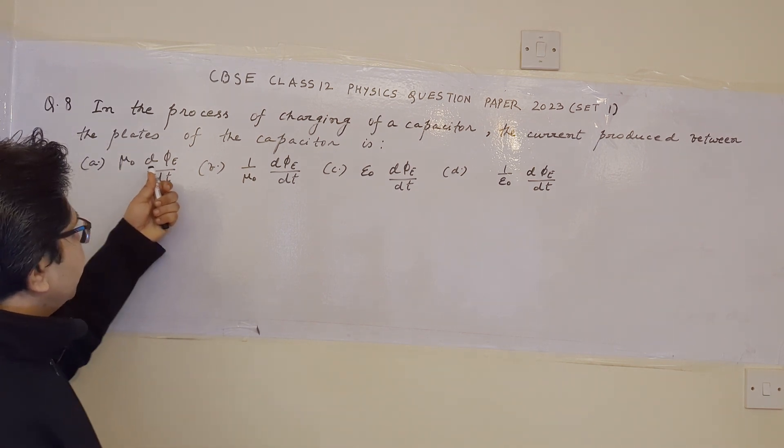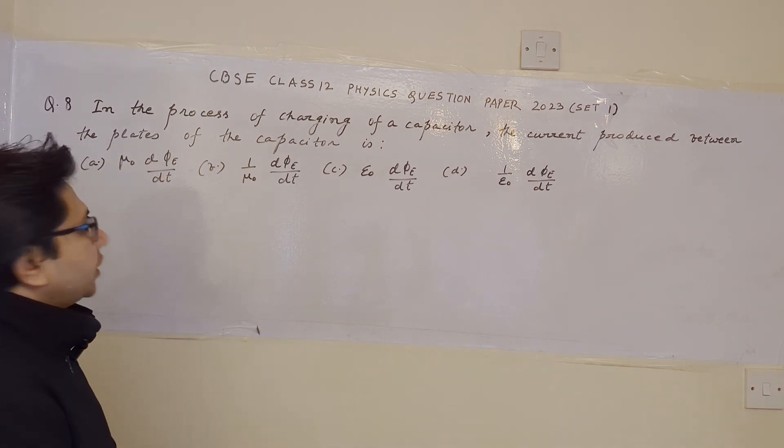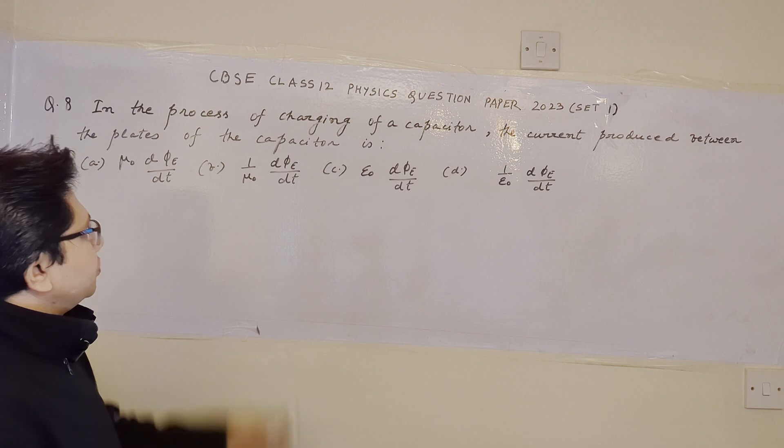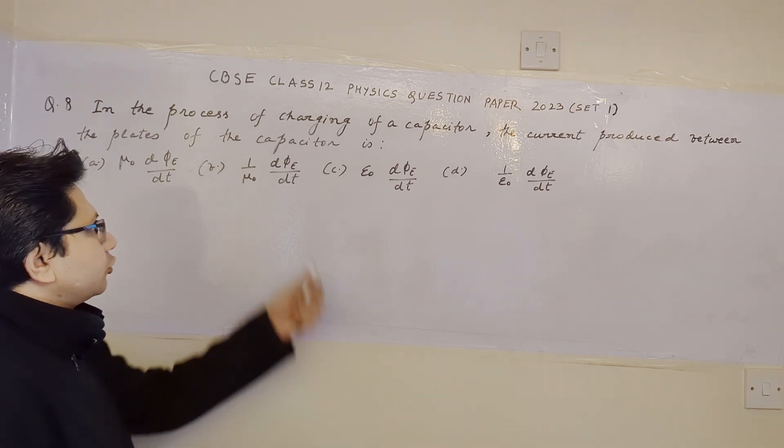option A, mu0 d by dt of phi sub e, option B, 1 upon mu0 d by dt of phi sub e,